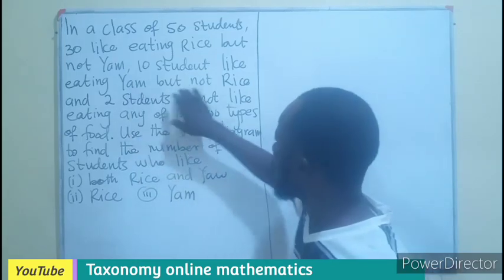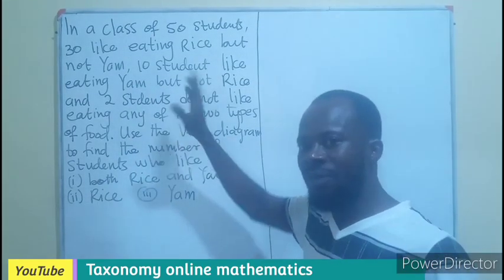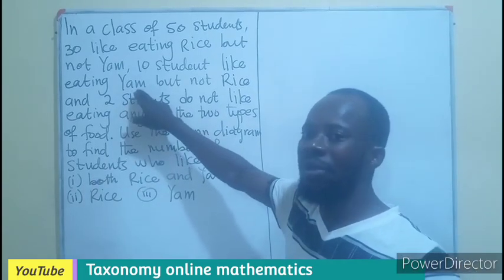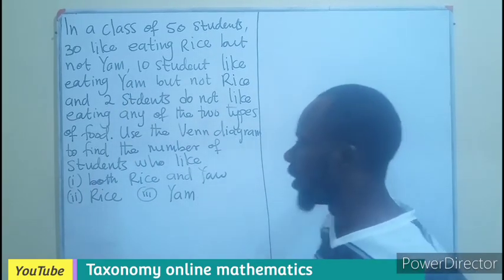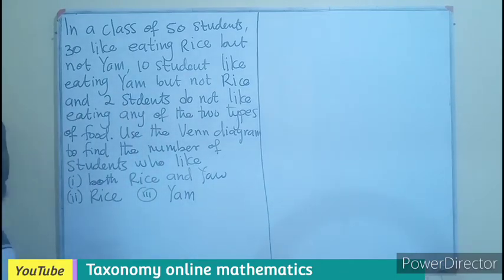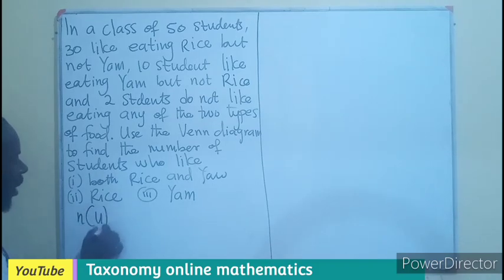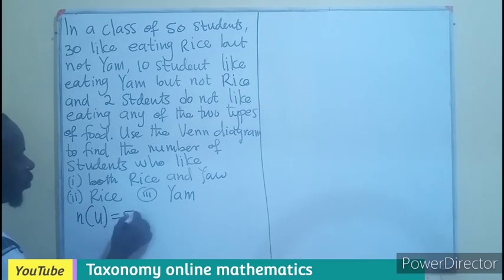This is going to be rice only. Then, yam but not rice will also mean there is no intersection whatsoever. Therefore, this is going to be yam only.